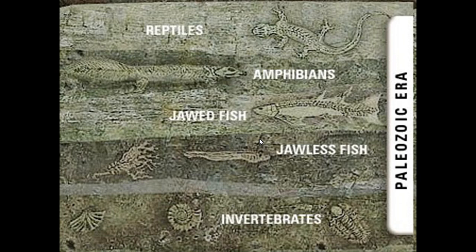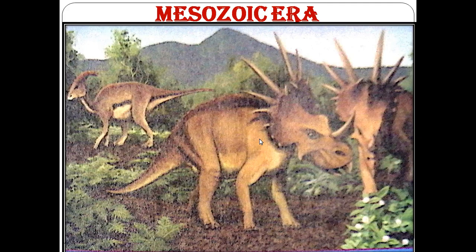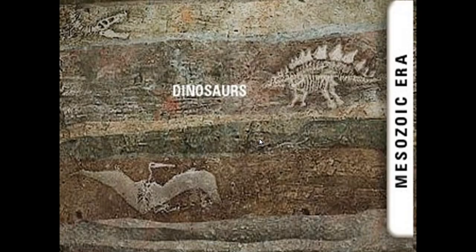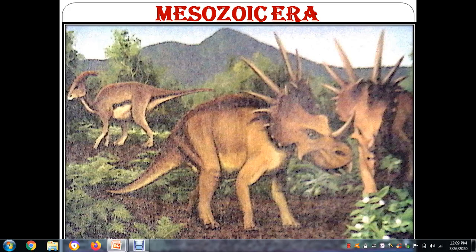The second era is the Mesozoic Era, also called the 'middle life' era. It marks the appearance of dinosaurs, mammals, birds, and flowering plants. The supercontinent Pangaea began to break up during this era, sea levels rose, and the climate became milder. Rock from the end of the Mesozoic Era suggests that many forms of life became extinct at the end of this era.